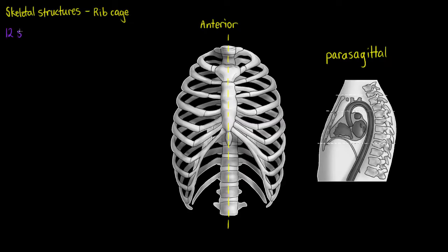The first thing we're going to notice about our ribcage is that we have 12 sets or 24 individual ribs, highlighted here: 1, 2, 3, 4, 5, 6, 7, 8, 9, 10, 11 and 12. So 12 sets, 24 ribs all up.